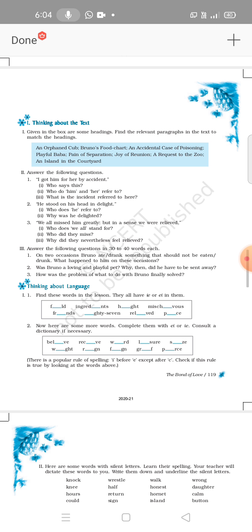Pain of separation - when Baba was sent to the zoo in Mysore, paragraph number fourteen. Joy of reunion when the author's wife met with Baba again - paragraph number seventeen. A request to the zoo - paragraph number eighteen. And an island in the courtyard - you can find this in paragraph number twenty one.